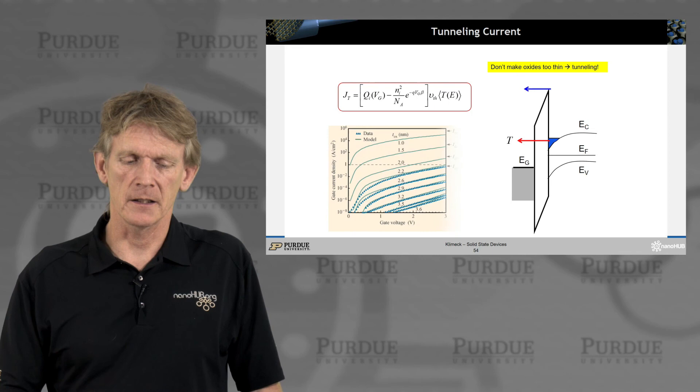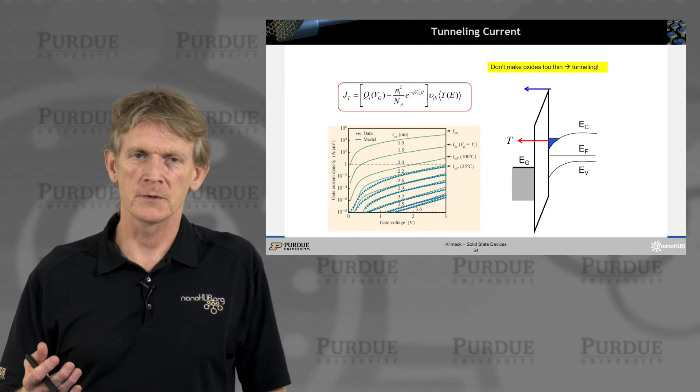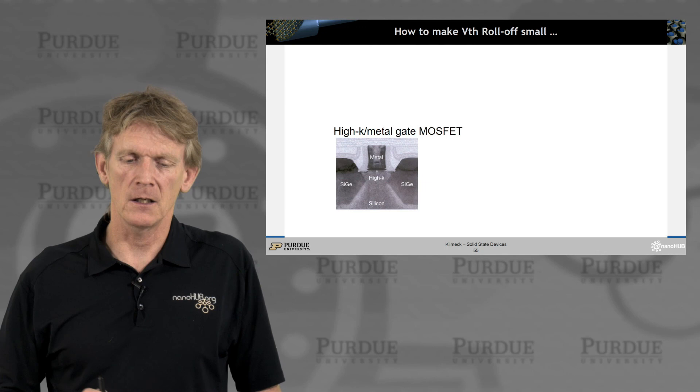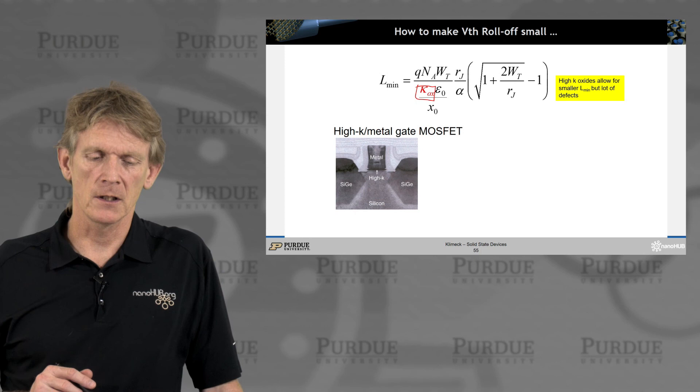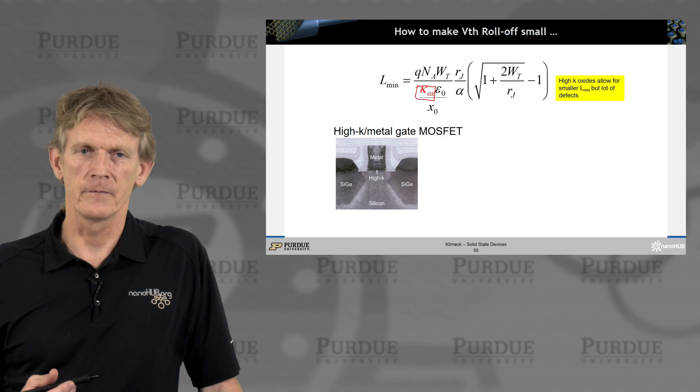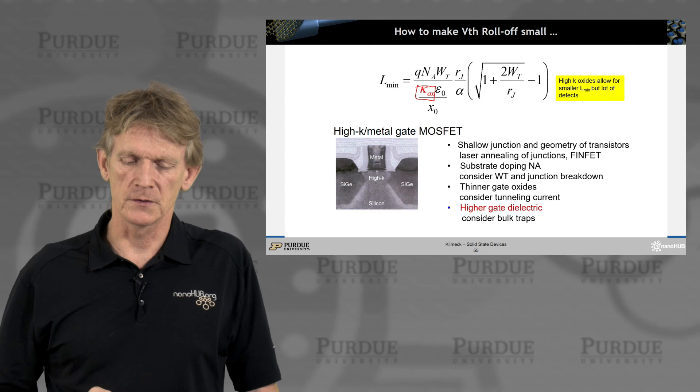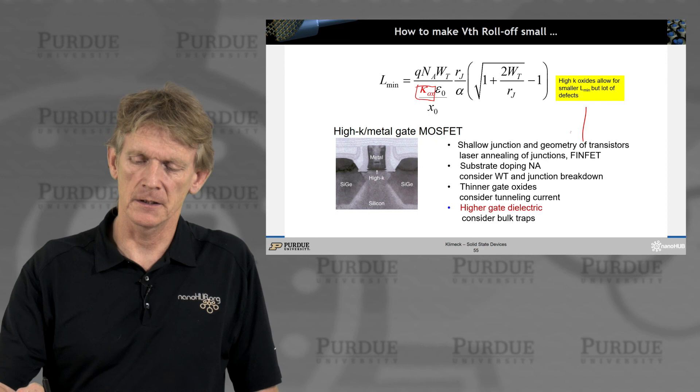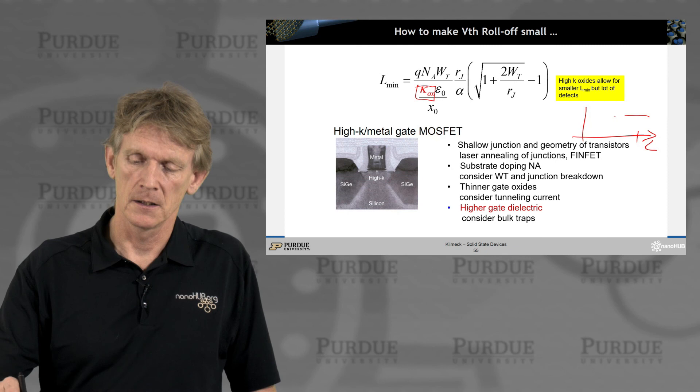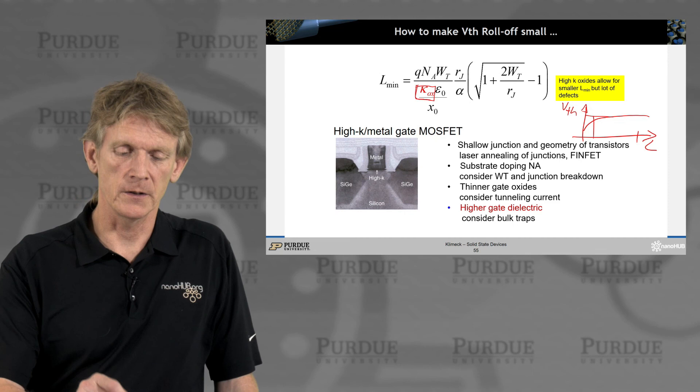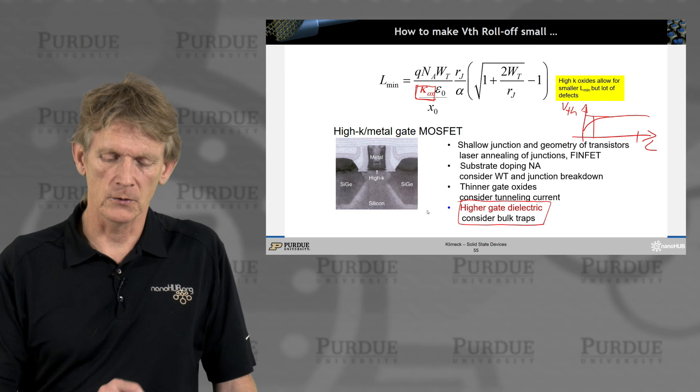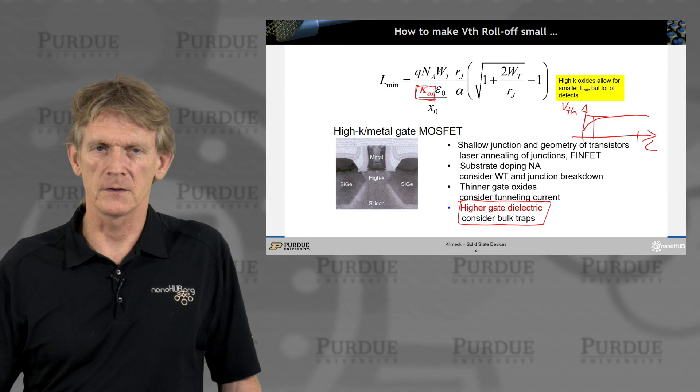So don't make the oxides too thin. You have the tunneling expressions. Here's another set of data where this has been performed and experimentally validated. And last one is here, how to make the V-threshold roll-off small, is to mess around here with the dielectric constant in the oxide. If you can make a high-K dielectric, you can reduce this L-min quite a bit, and therefore reduce the effects on the threshold fluctuation, right? So we had plotted here as a function of gate length L. We said the delta or the V-threshold is going down. And you can reduce this effect by increasing the oxide. We had discussed that in the previous section. But the downside is that these dielectrics also have charge traps in them which have their own issues again.